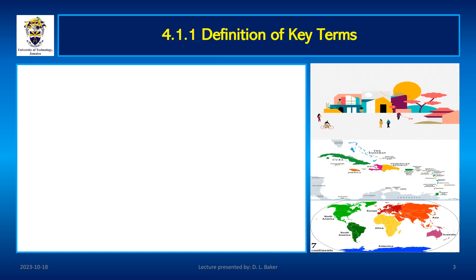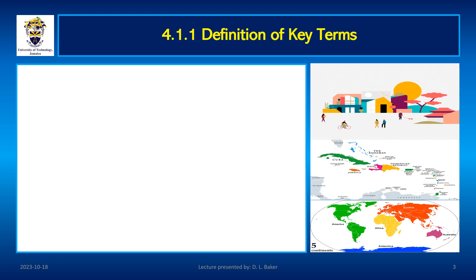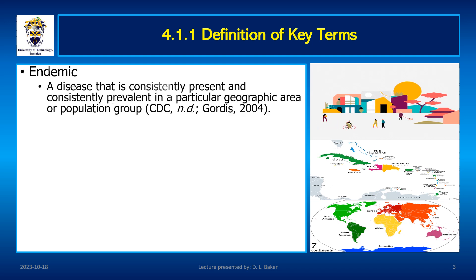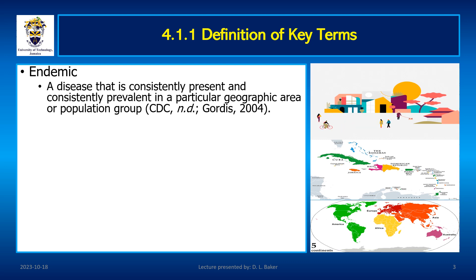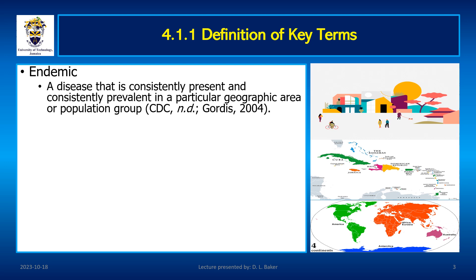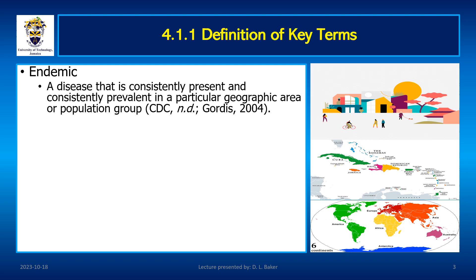Disease occurrence in a community can be classified as expected levels or excess levels. Endemic, which is the expected level, is a habitual presence of a disease within a given population or geographic area. It may also be referred to as the usual prevalence of that disease within such an area. An example is malaria in Belize.